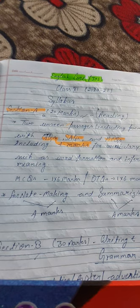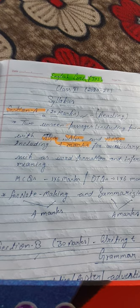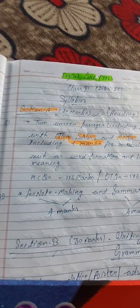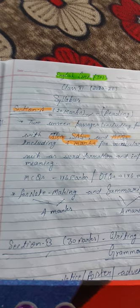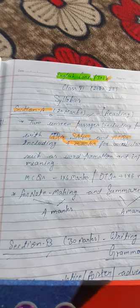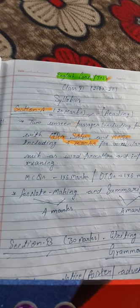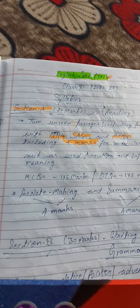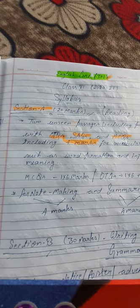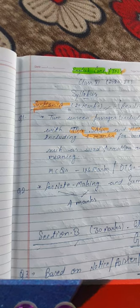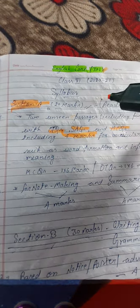Good morning students, welcome to English class for Class 11. Let's start our first class by knowing about our syllabus for Class 11 provided by CBSE for session 2021. This is the syllabus of English Core, code number 301. There will be three sections: Section A for reading, Section B for writing and grammar, and Section C for literature. Section A is of 20 marks and is called the reading section.